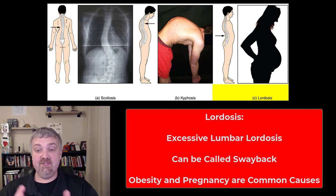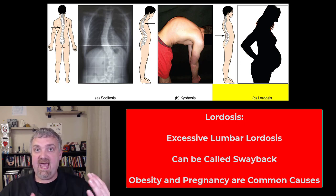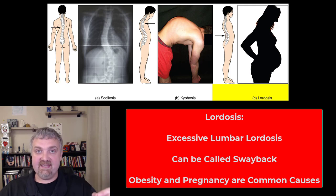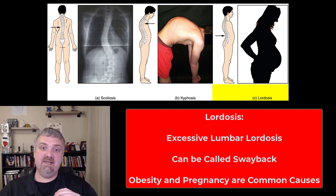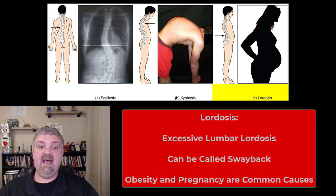A kyphosis and a lordosis can be normal curves, which we all should have: cervical lordosis, thoracic kyphosis, lumbar lordosis, and sacral kyphosis. But if they're excessive, they can be a problem.